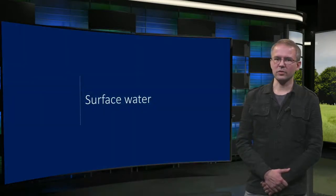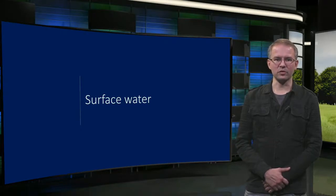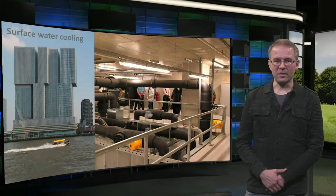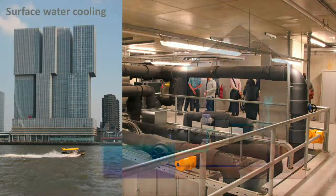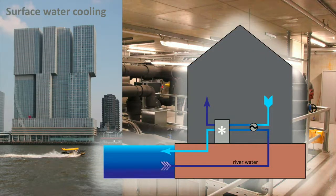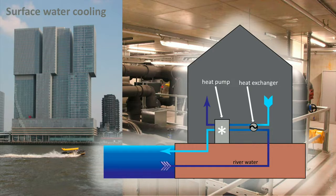The second source is surface water. Lakes, rivers, and the sea can all be used for heating or cooling. An example that combines several technologies is the Rotterdam building, which uses the Maas river for cooling. Here, river water is pumped through the cooling plant in the building and either used with just a heat exchanger or, if needed, cooled down further with a heat pump. The same principle can be used for heating — for example with seawater, which is relatively warm in winter — however, a heat pump is then necessary.